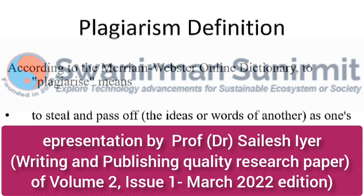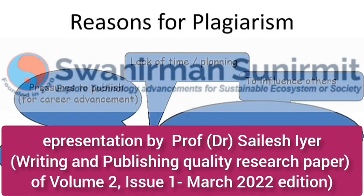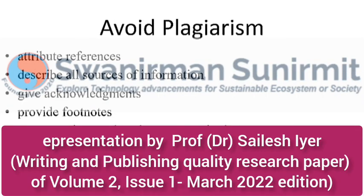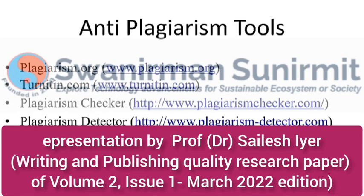Plagiarism should be as low as possible. Turnitin is the major site for plagiarism checking. Some journals require below 15%, some below 10%, and conferences have their own rules depending on where the paper will be published. This is how plagiarism is to be checked and maintained.